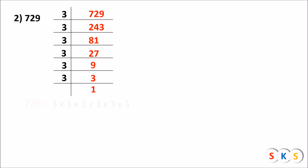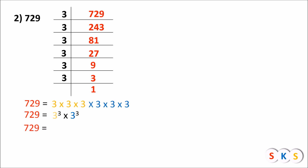So we have the prime factors of 729. Therefore 729 equals 3 × 3 × 3 × 3 × 3 × 3. We make groups of three same numbers: 3 × 3 × 3 is one group, and 3 × 3 × 3 is the next group. Therefore 729 equals 3 raised to 3 into 3 raised to 3, which is (3 × 3) whole raised to 3, equals 9 raised to 3. So 729 is the cube of 9, meaning the cube root of 729 is 9.